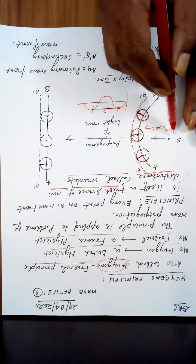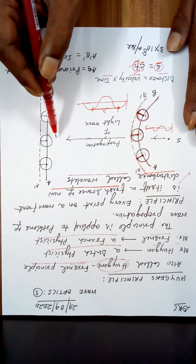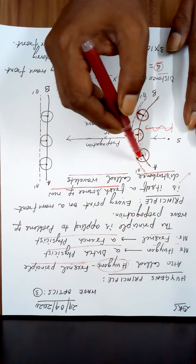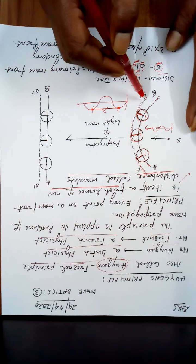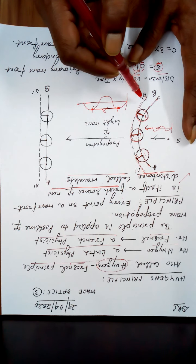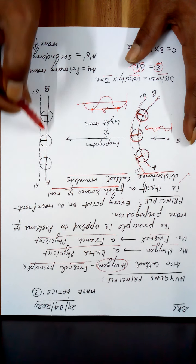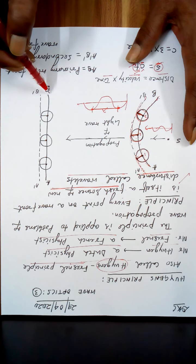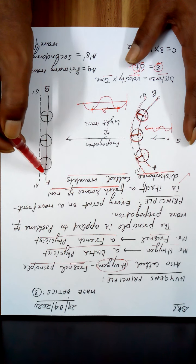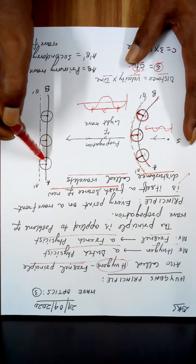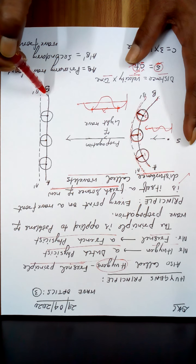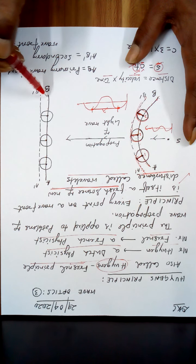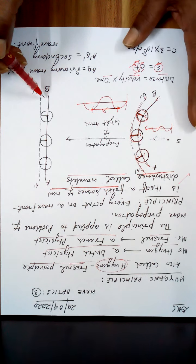So the wave is propagating like this. At a far-off distance, this will appear straight. Let AB be a plane wavefront, called the primary wavefront — meaning all the points on AB are identical in the state of vibration, that is the same thing as saying they are in phase.